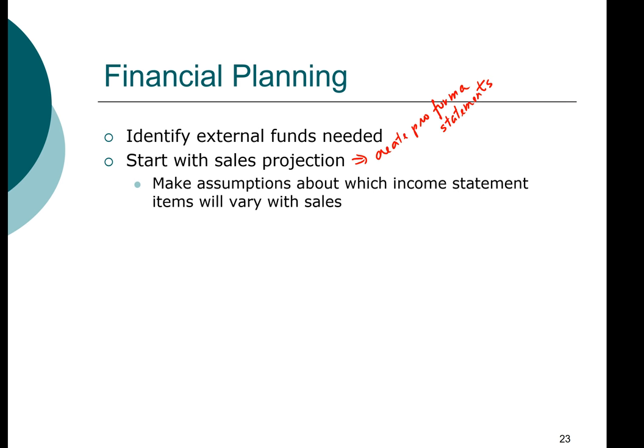Once you have identified the sales projection and create your proforma statements, you need to identify which items on the income statement and on the balance sheet will vary with sales. The work that we have done earlier becomes very valuable here. The items that will vary with sales — you already have those percentages.